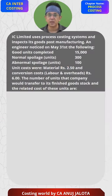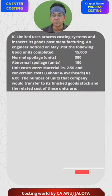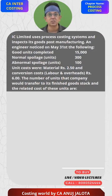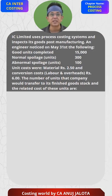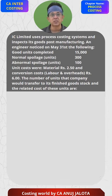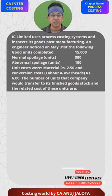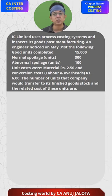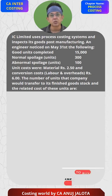CA Inter Process Costing MCQs. IC Limited uses process costing systems and inspects its goods post manufacturing. An engineer noticed on May 31st the following: good units completed 15,000, normal spoilage 300, abnormal spoilage 100 units.